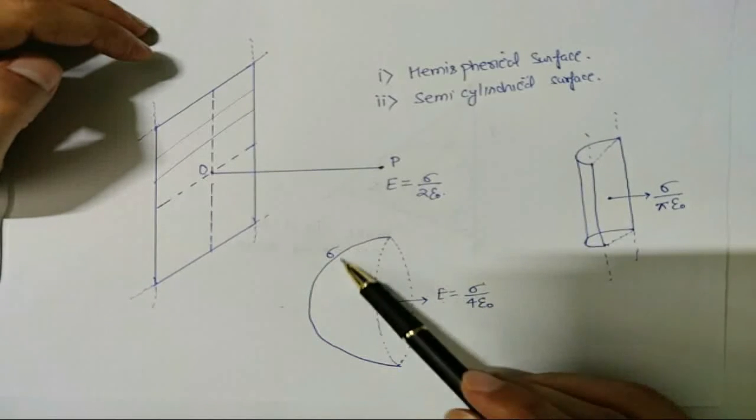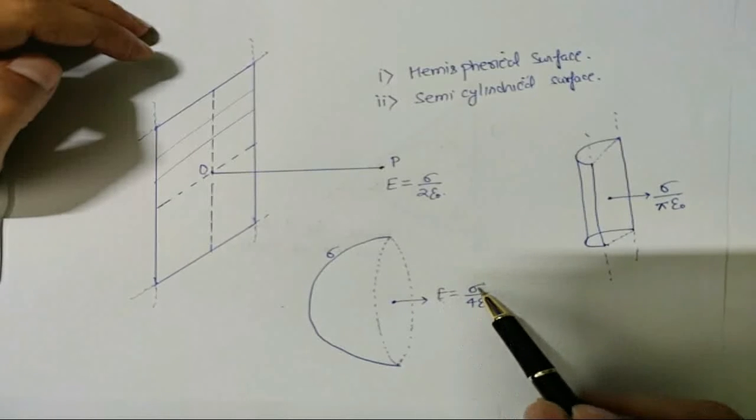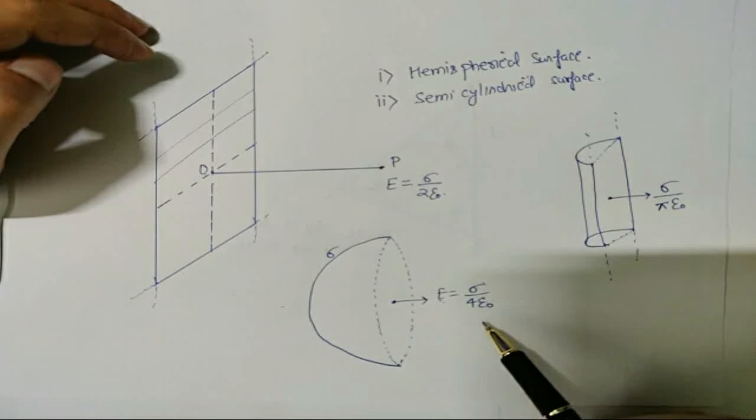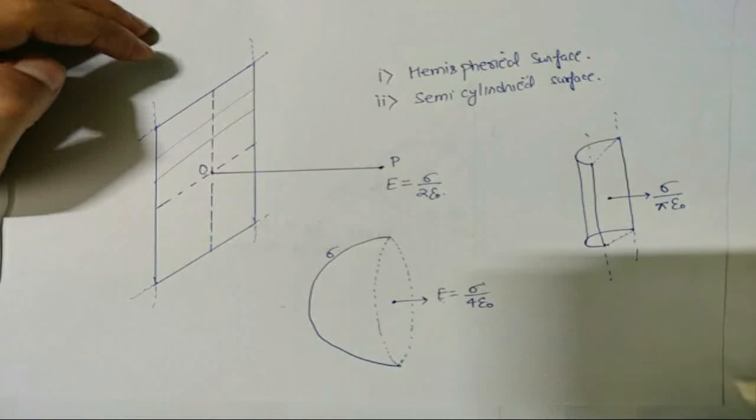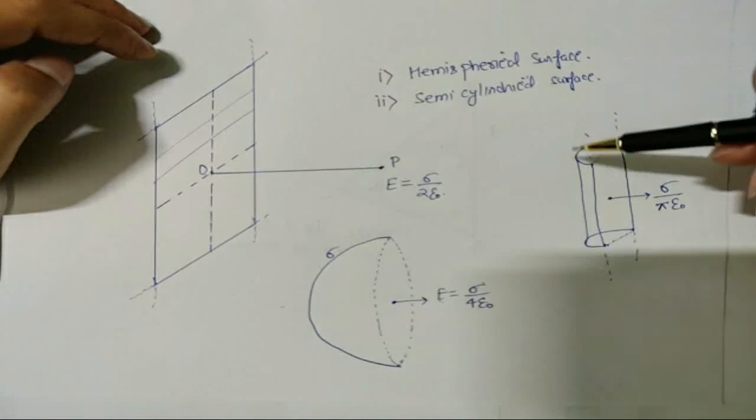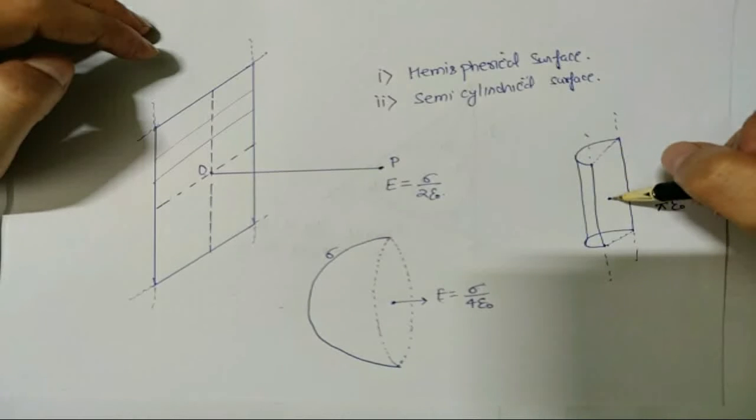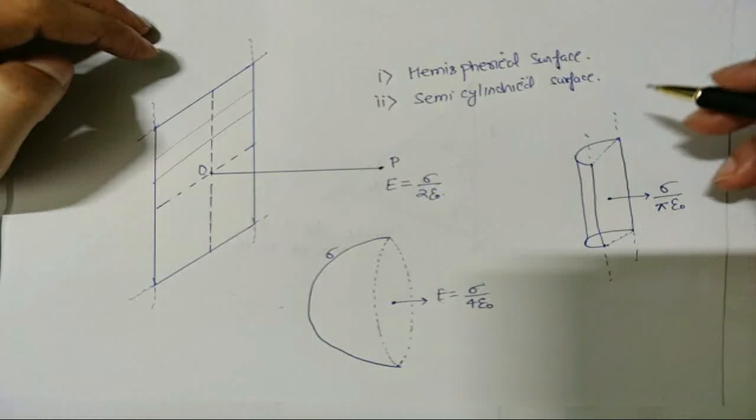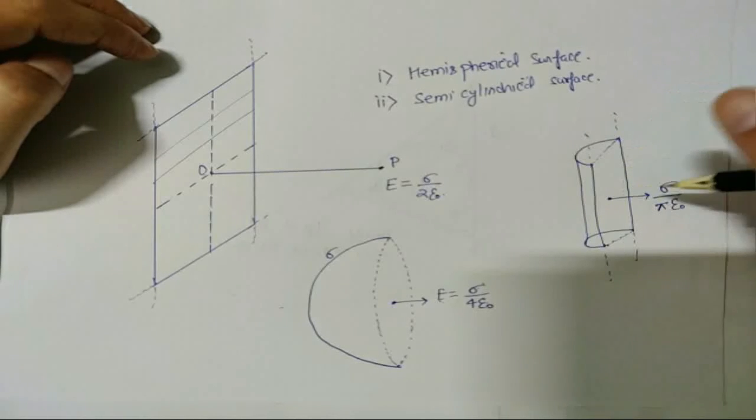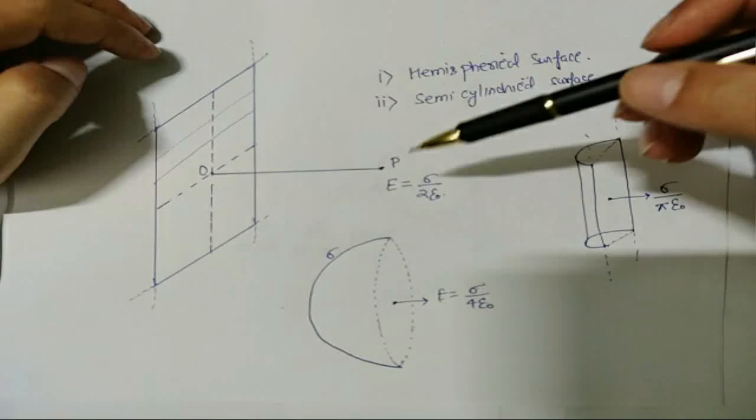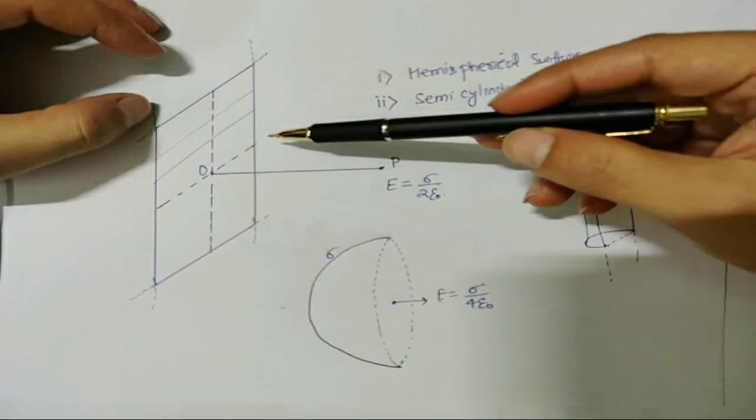And there is one more proof: we know that the electric field at the center of a hemispherical charge surface is E equals sigma by 4 epsilon naught. And this is a little bit lesser known result, that the field at the point on an axis of the infinitely long semi-cylinder is sigma by pi epsilon naught. So the results also contradict, and we can say that this concept cannot be extended to two dimensions.